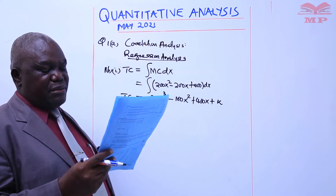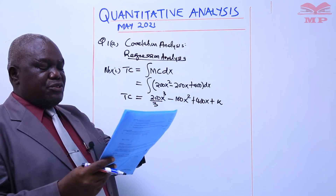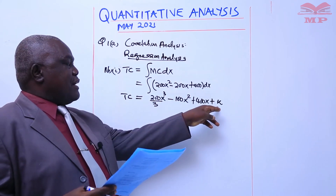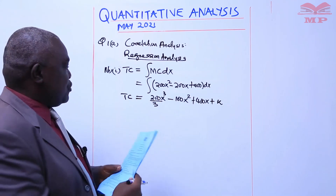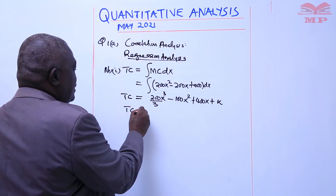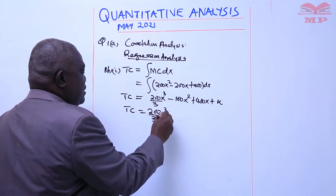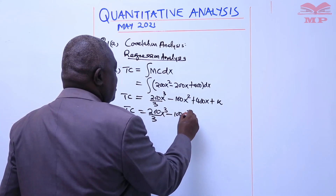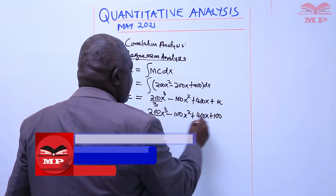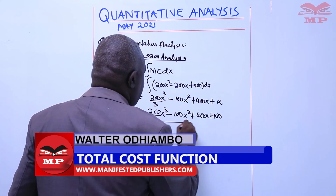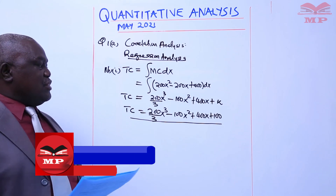We are told the fixed cost of the company is 100,000 per month — not 1 million. Therefore, since units are in thousands, k becomes 100. We write 100, not 100,000, because everything is in thousands of shillings. So the total cost function becomes: TC equals 200 over 3 x cubed minus 100x squared plus 400x plus 100. This is the total cost function and you get your two marks.